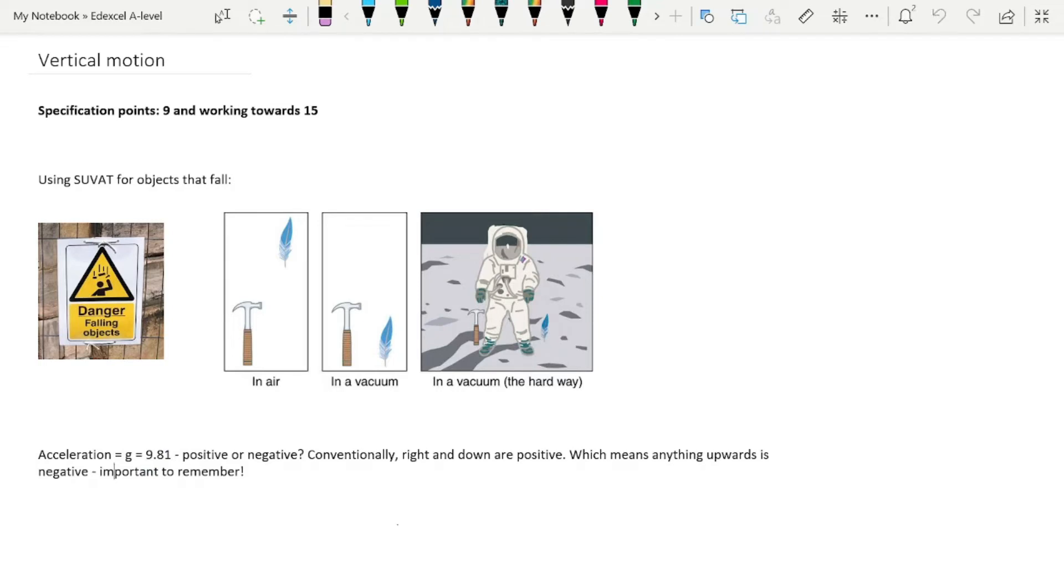What you have to remember is that any speed upwards has to be given a negative number. We're going to work through an example to show you this in real time.